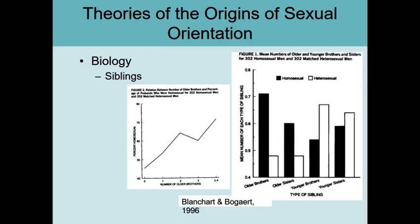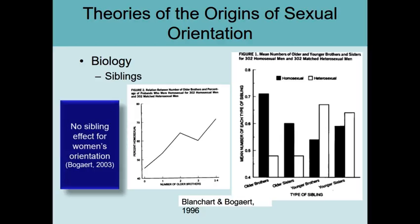There's kind of a weird dip at three older brothers, but even then 60% of those respondents were homosexual. A followup study by Bogaert on women did not find any association between women's sexual orientation and how many siblings were older or younger than them.